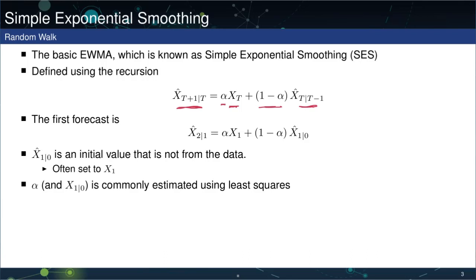We've seen this specification enough to know that we can do recursive substitution, and we can get the expression that x-hat t plus 1 given t can be written as alpha xt plus alpha(1 minus alpha) xt minus 1 plus alpha(1 minus alpha)^2 xt minus 2, and so on, all the way back to the beginning of the sample. This is the expanded form of the exponentially weighted moving average.